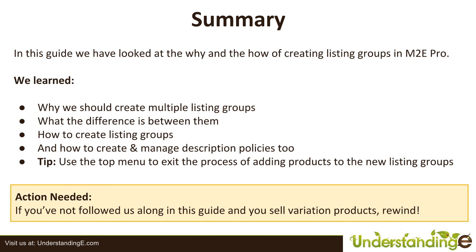As always, there's an action needed: if you haven't followed along so far, it's time to hit rewind and start getting your listing groups ready to sell variation products. We've been building up to this stage — in the next guide we'll show you how to walk, adding a couple of products to our system with the different listing groups, then listing them onto eBay and purposely demonstrating the image swapping so you can actually see it in action. We'll see you soon!